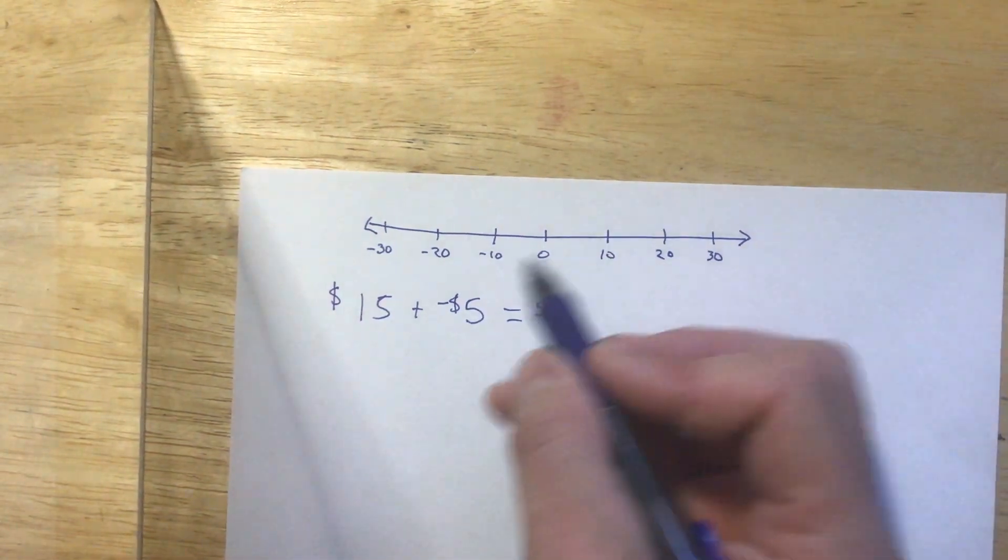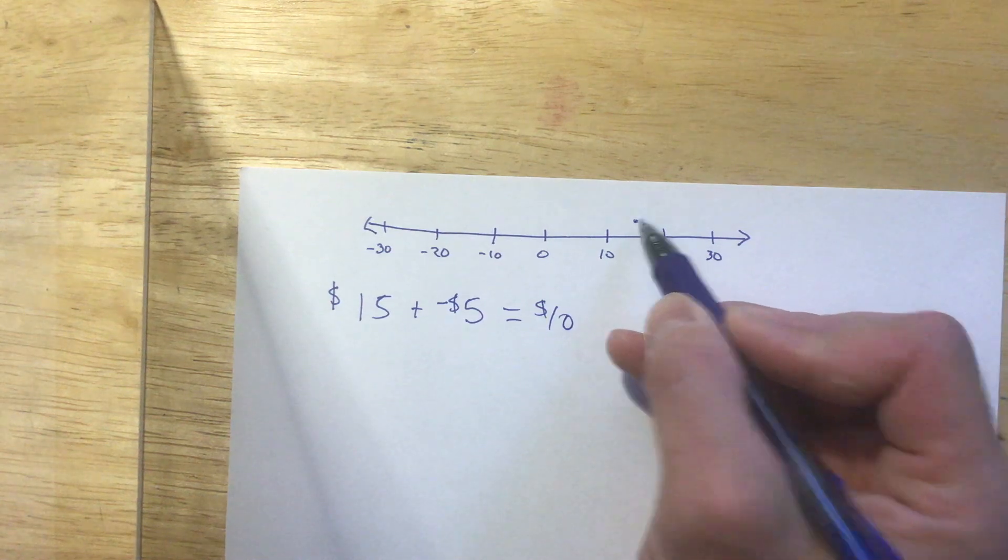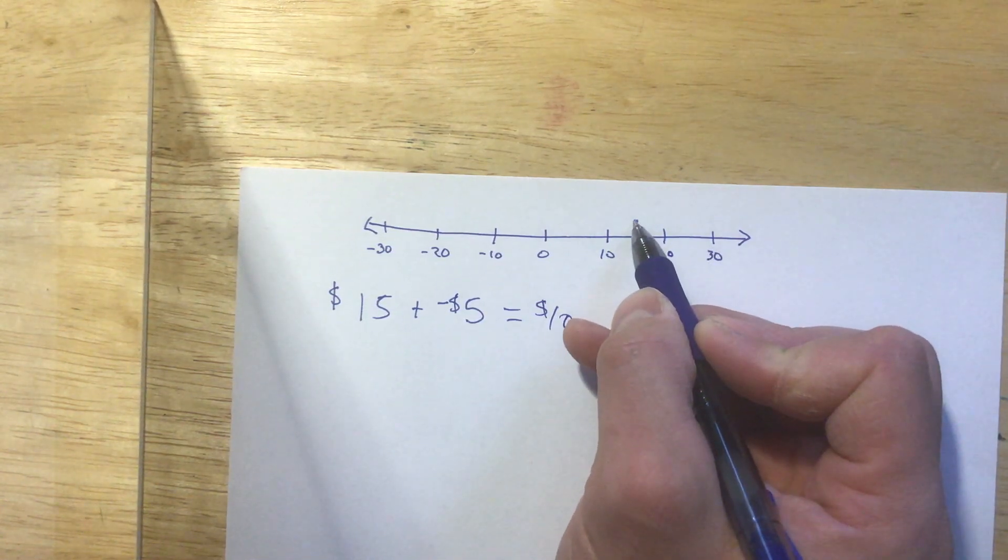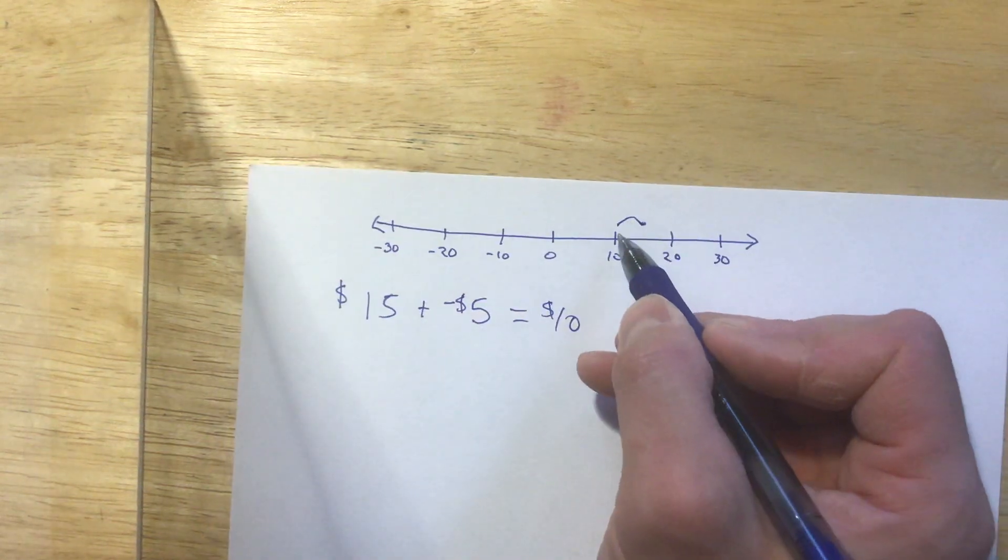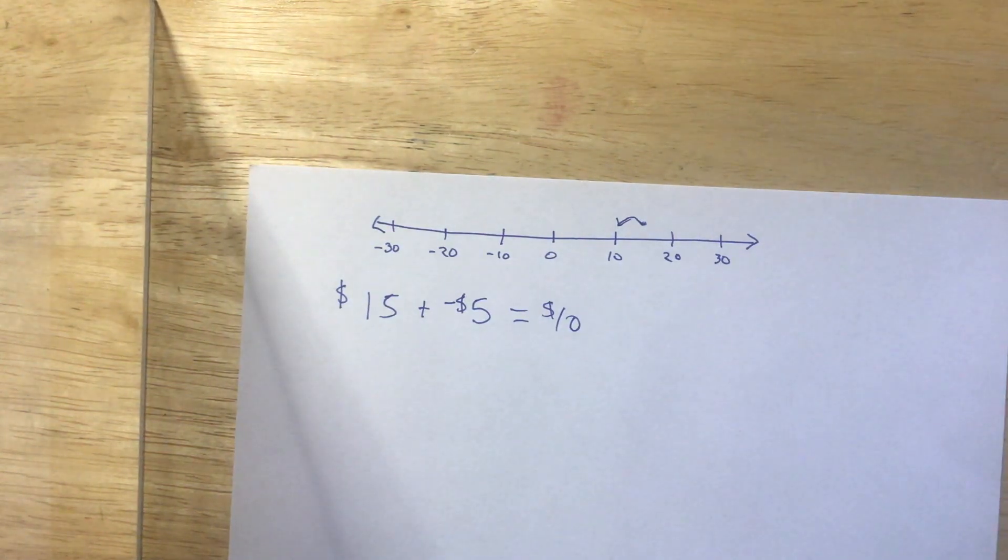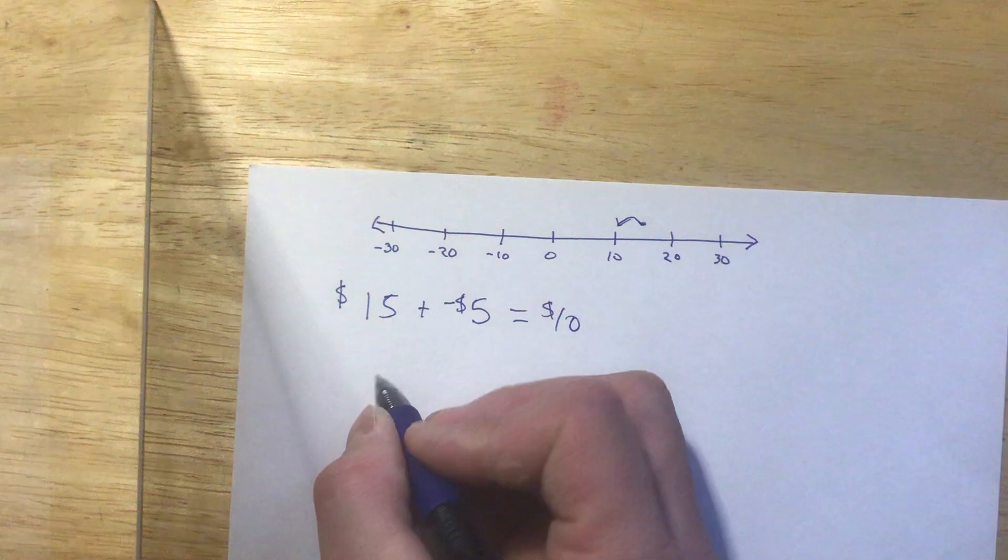So that would be like if I was here at 15, but then I had to go down five because I had a negative shift here. So I'd end up on the 10 spot. So adding a negative is basically just subtraction, right? When you add a negative, it's just subtraction.